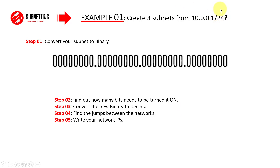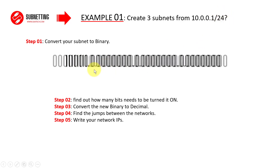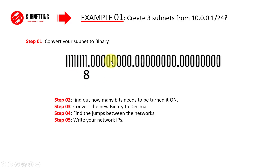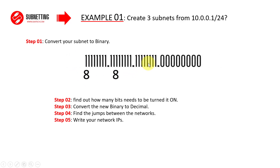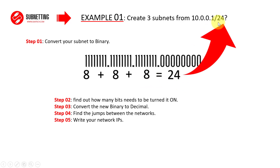For example one — create three subnets for this IP with subnet mask /24. Step one is converting the subnet mask to binary. We have four octets, so we turn on 24 bits: eight bits in the first octet, eight in the second, and eight in the third. Eight plus eight plus eight equals 24, which matches the /24 given in the example.